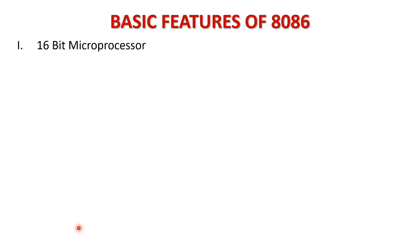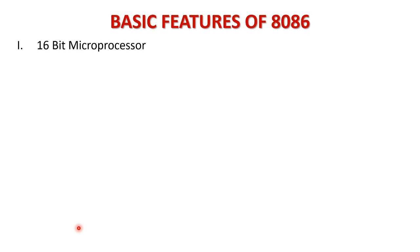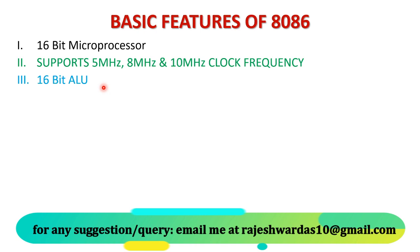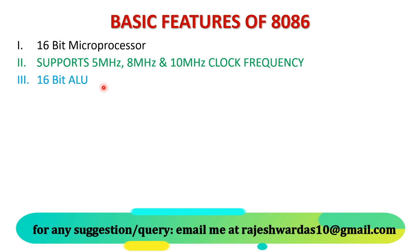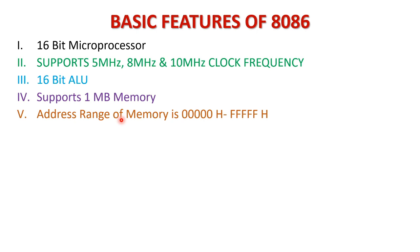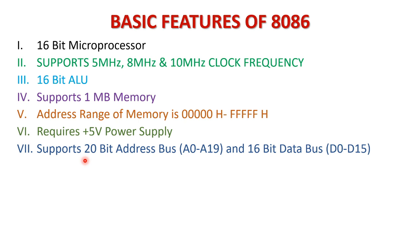The basic features of the 8086 microprocessor are: it is a 16-bit microprocessor. It supports 5MHz, 8MHz and 10MHz clock frequency. Its ALU, that is the arithmetic logic unit, is of 16-bit. It supports 1MB of memory and address range is from 00000H to FFFFFH. It requires plus 5V power supply for operation, and it supports a 20-bit address bus from A0 to A19 and 16-bit data bus from D0 to D15.